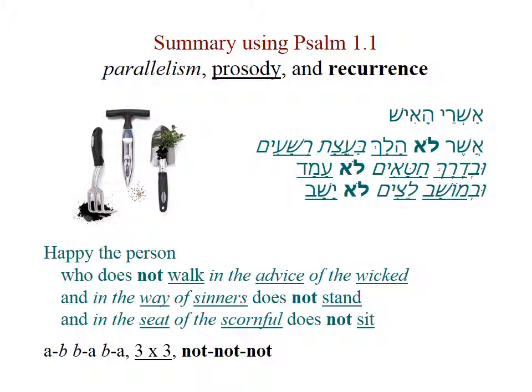You can see the parallelism in the English. We have a person who does not walk in the advice of the wicked, and in the way of sinners does not stand, and in the seat of the scornful does not sit. It's A-B, B-A, B-A. It's also a three-by-three structure, and it has three repeating knots in it. So we see all three tools very clearly — they're like three gardening tools.